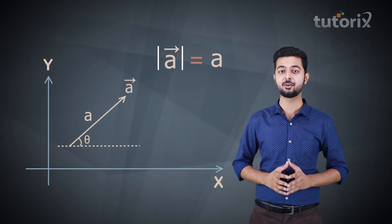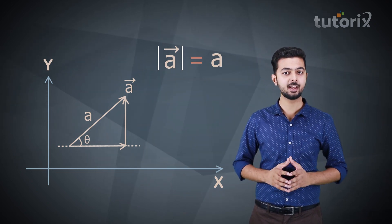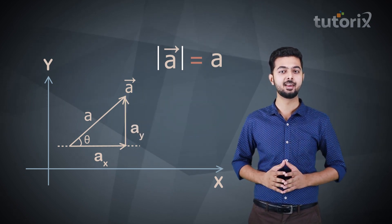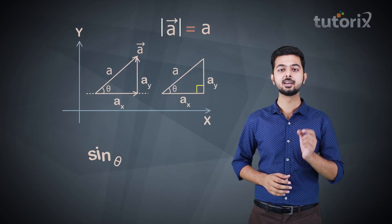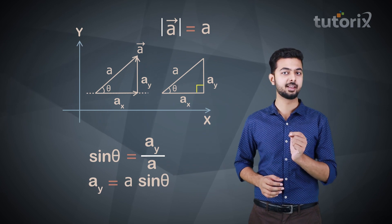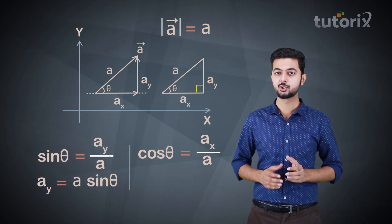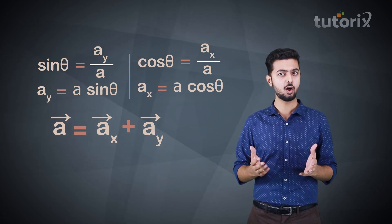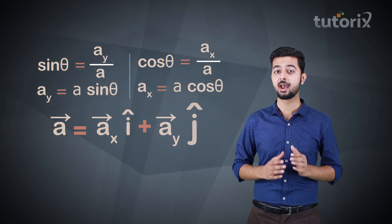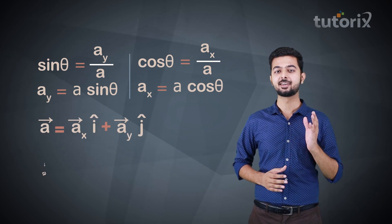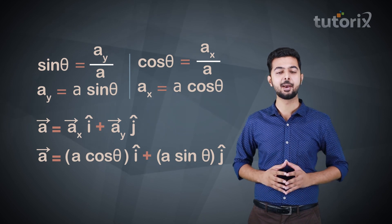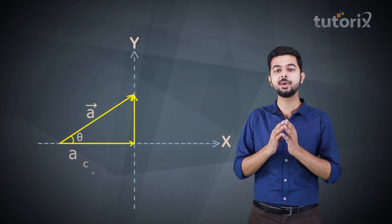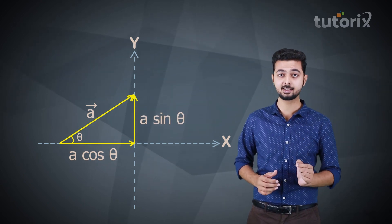To do so, we use basic trigonometry. We draw the x-component and y-component as shown. Let the length of the x-component be Ax and the y-component be Ay. In the right-angle triangle formed, sin θ = Ay/A, so Ay = A sin θ, and cos θ = Ax/A, so Ax = A cos θ. Now we know the magnitude of both components and their directions — x-component along î and y-component along ĵ. So vector A = A cos θ î + A sin θ ĵ. Note: if a vector makes angle θ with an axis, its component along that axis is A cos θ, and along the perpendicular axis is A sin θ.